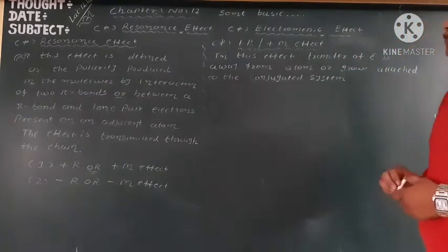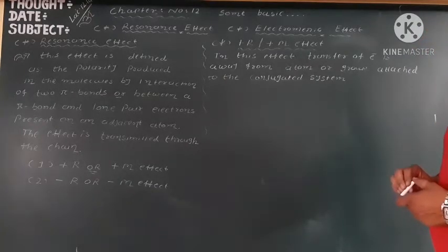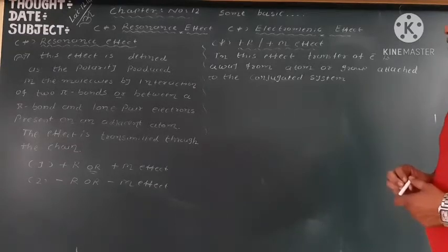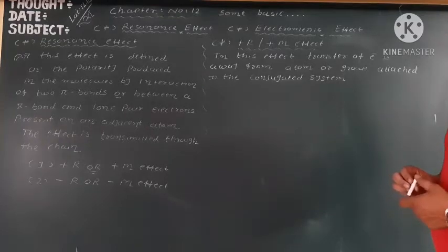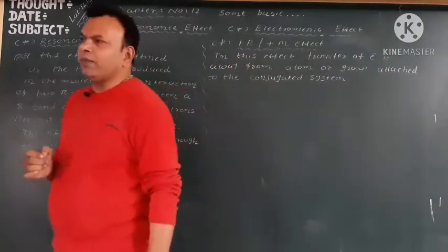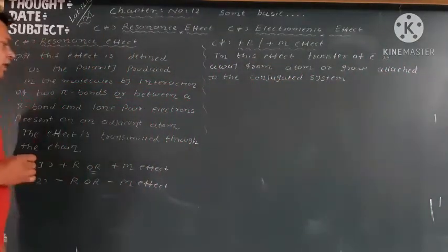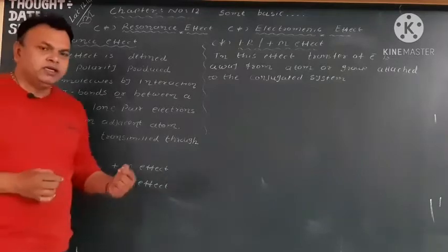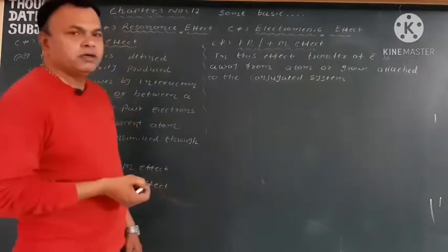The effect is defined as the polarity produced in molecules by interactions of two pi bonds, or between a pi bond and lone pair electrons present on adjacent atoms. The effect is transmitted throughout the chain. Toh in this effect kya hoga ke 2 pi bond ya phir pi bond aur lone pair ke bich mein jo effect hoga, ye effect puri chain mein transfer hogi, in the chain of ring or carbon.